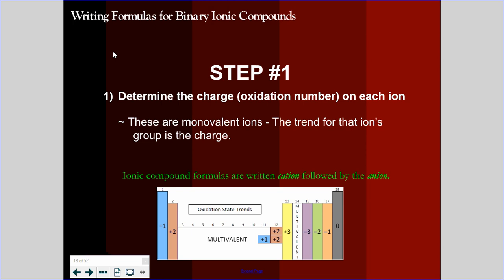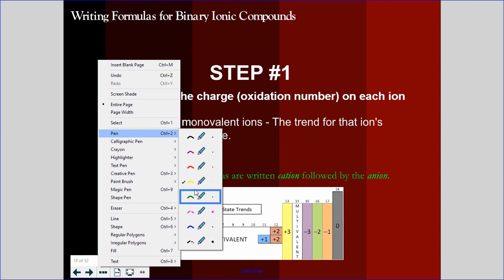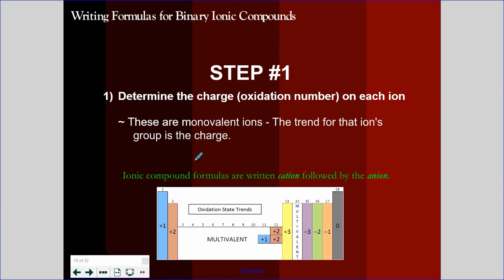When we need to write the formula of a binary ionic compound, it means we already have the chemical name. For example, if it said magnesium fluoride here. First thing we would be noticing is that we have a metal followed by a nonmetal. And when we see that, that should tip our brains right into an ionic compound.